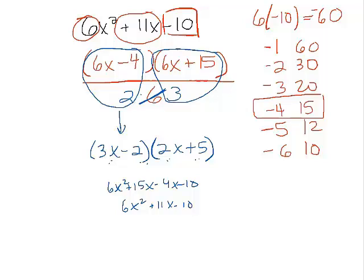This looks pretty good to me. So I would call this the a times c method. See, that's what really helped us here. We figured out what multiplies to a times c. And then which of those pairs added to b.